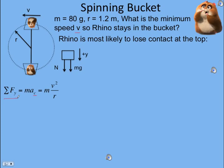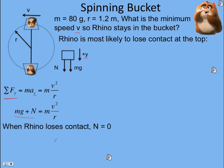What are the sum of the forces in the y direction? There's a normal force and weight, both pointing down. We made down positive, so they are both positive. Sum of the forces is mg plus the normal force, and that equals ma. When Rhino loses contact, the normal force goes to zero. We set the normal force equal to zero for the moment when he's just about to lose contact.